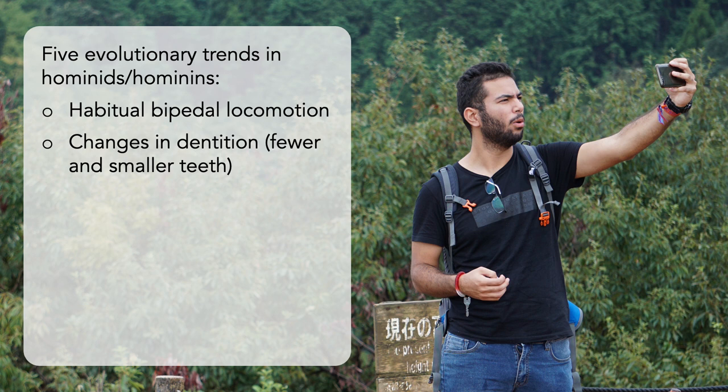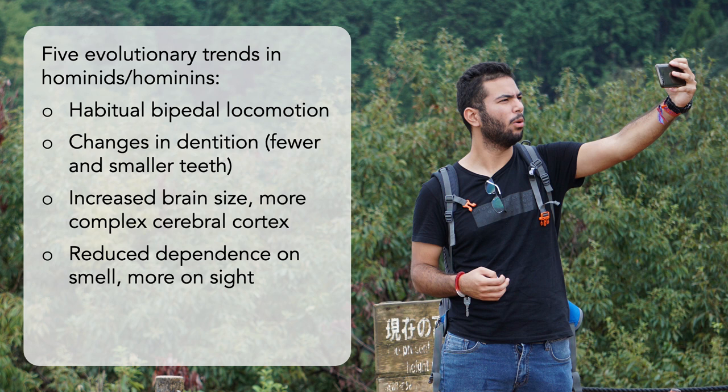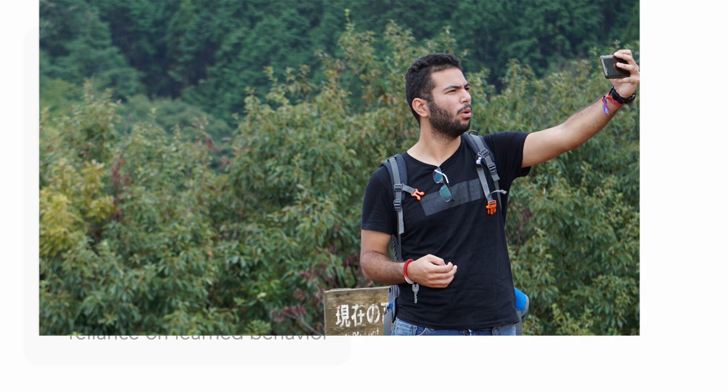There is a trend of increasing brain size and a more complex cerebral cortex. This, along with structural changes in the skull, facilitated an increased reliance on sight instead of smell. Finally, we see important behavioral changes, including extended durations of parental care and an increased reliance on learned behaviors. This has led to the emergence of complex culture and eventually language and symbolic art.